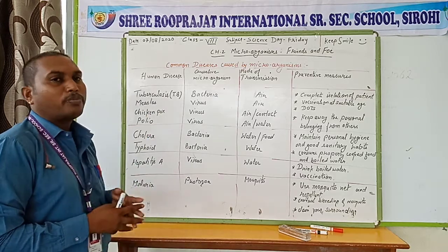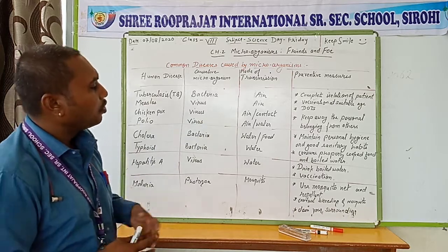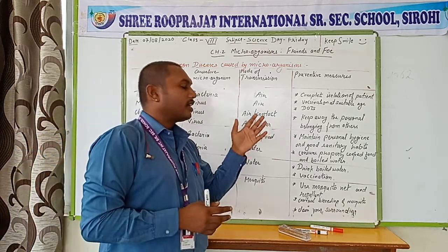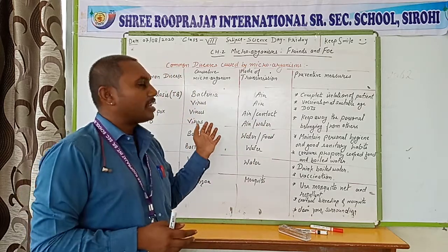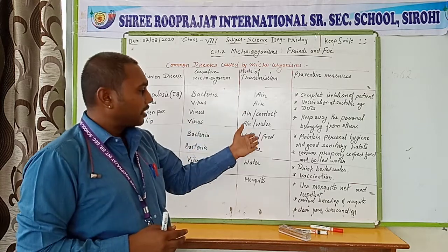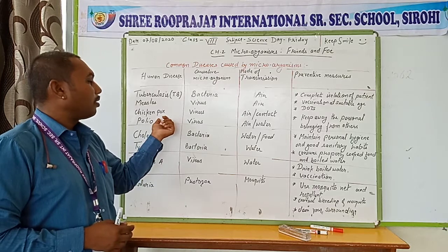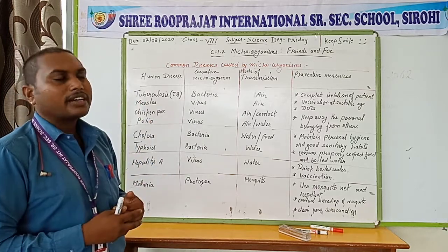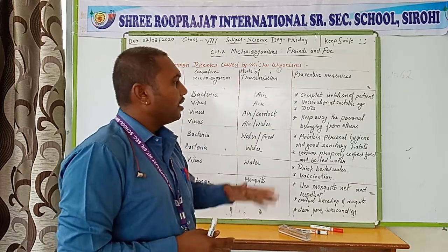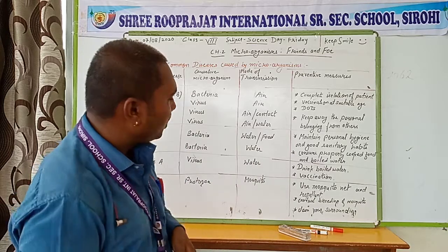The fourth disease is polio, also caused by a virus. This virus can spread through air or contaminated water. If water is contaminated by this virus, a person drinking that water can suffer from the polio disease. We should prevent the use of contaminated water. The preventive measures are the same: complete isolation, vaccination at a suitable age, and keeping personal belongings away.